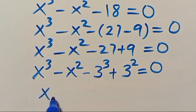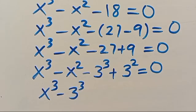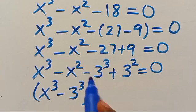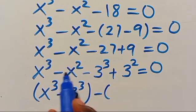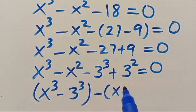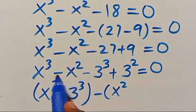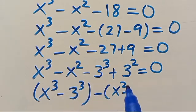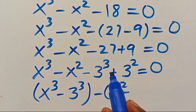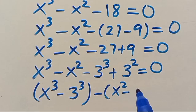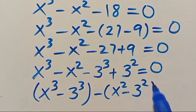So here we will have x to the power of 3 minus 3 to the power of 3. Then we also have, factoring out minus, x to the power of 2. When we multiply with minus, we get minus back, so minus 3 to the power of 2, equals zero.